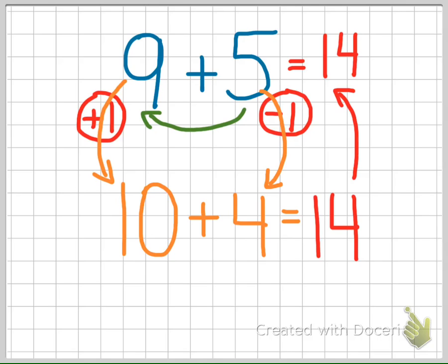If the 9 gets one more, it becomes a 10. And the 5 gets one taken away. It becomes one smaller and becomes a 4. Now we use the pattern of adding a 10 to a single digit number. 10 plus 4 equals 14.